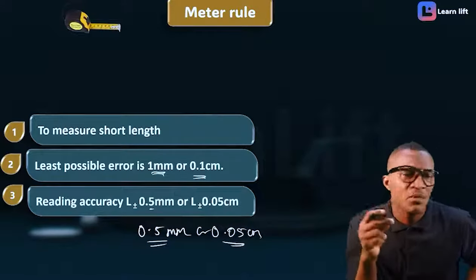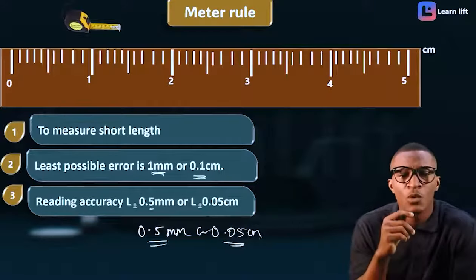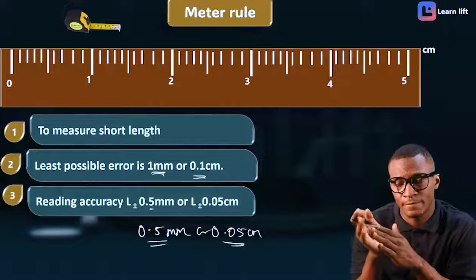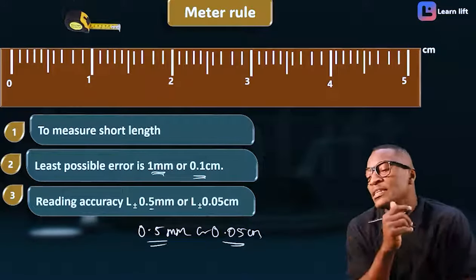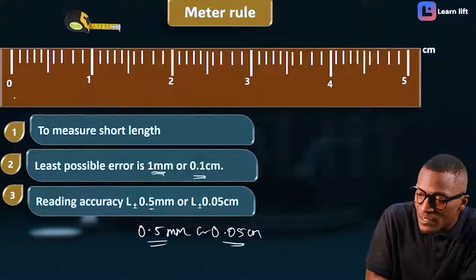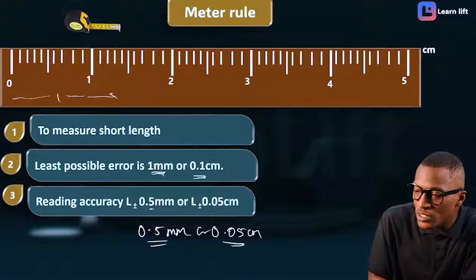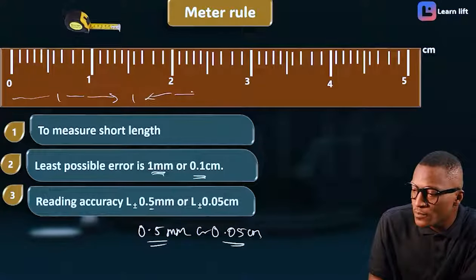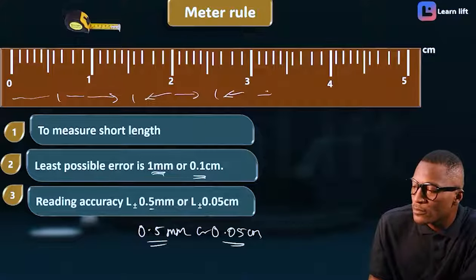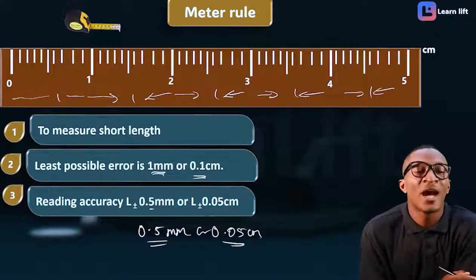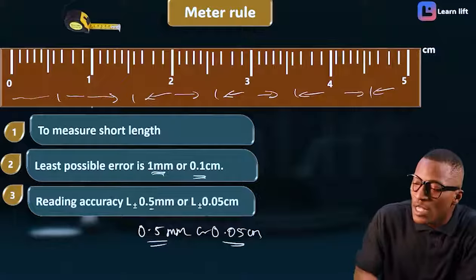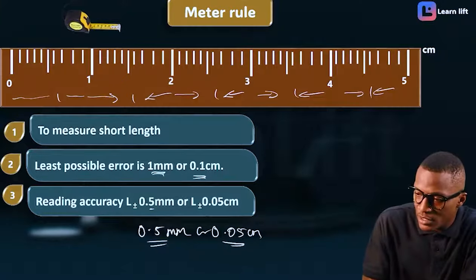Now let's prove this. Look at this meter rule. We said the least possible error of a meter rule is 1 millimeter or 0.1 centimeter. You can observe that from one centimeter mark to the next, the difference is 1. From 0 to 1 is 1, from 1 to 2 is 1 — the difference between each major mark is 1 centimeter. Now let's count the small lines between each centimeter mark.